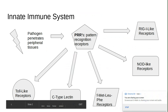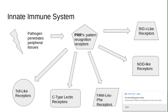We're going to start with the innate immune system. The scenario is a pathogen has successfully penetrated your peripheral tissue, such as your skin or your mucous membranes. The first thing that's going to happen is pattern recognition receptors are going to detect pathogen-associated molecular patterns, which I will call PAMPs from here on out.